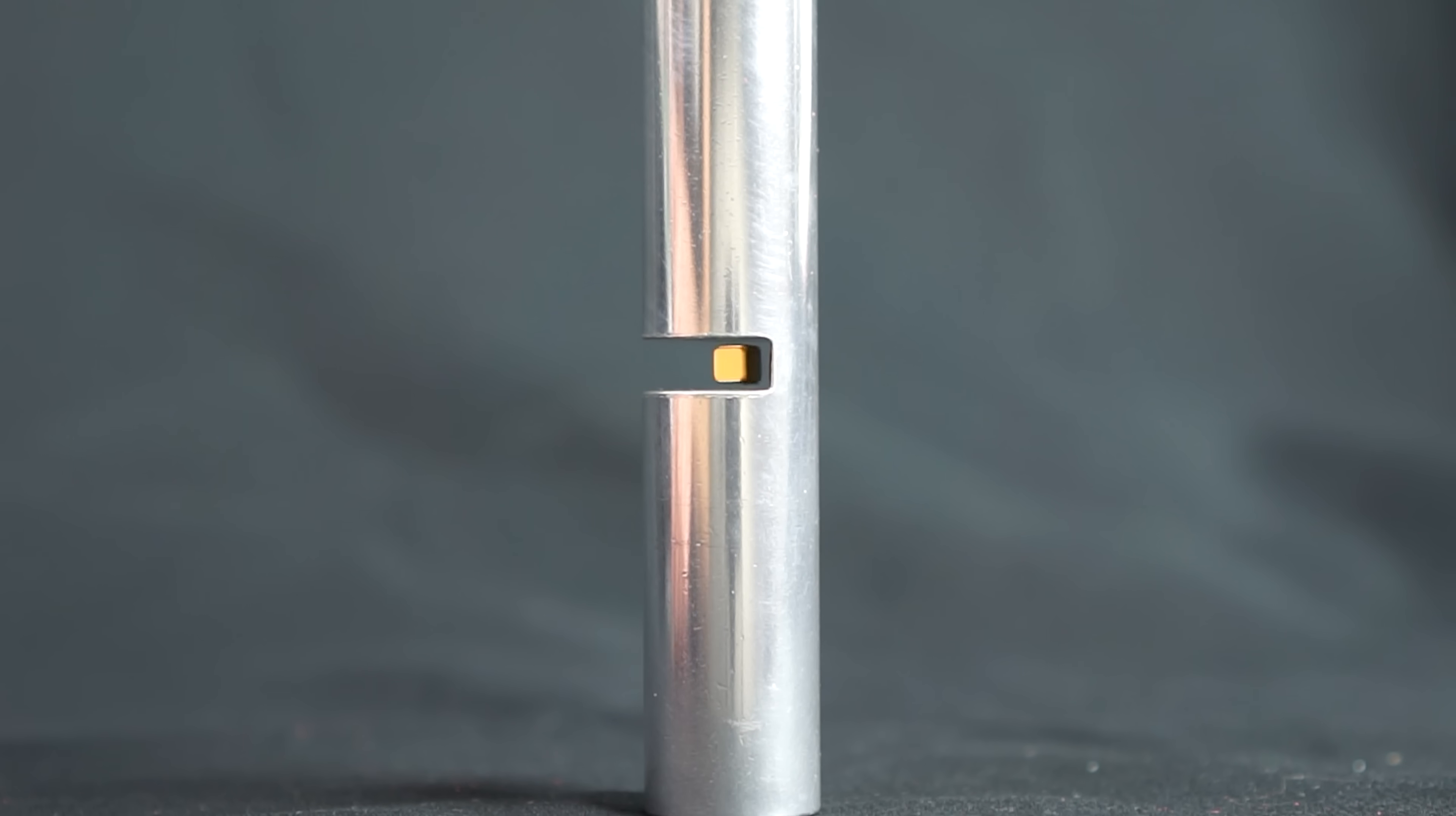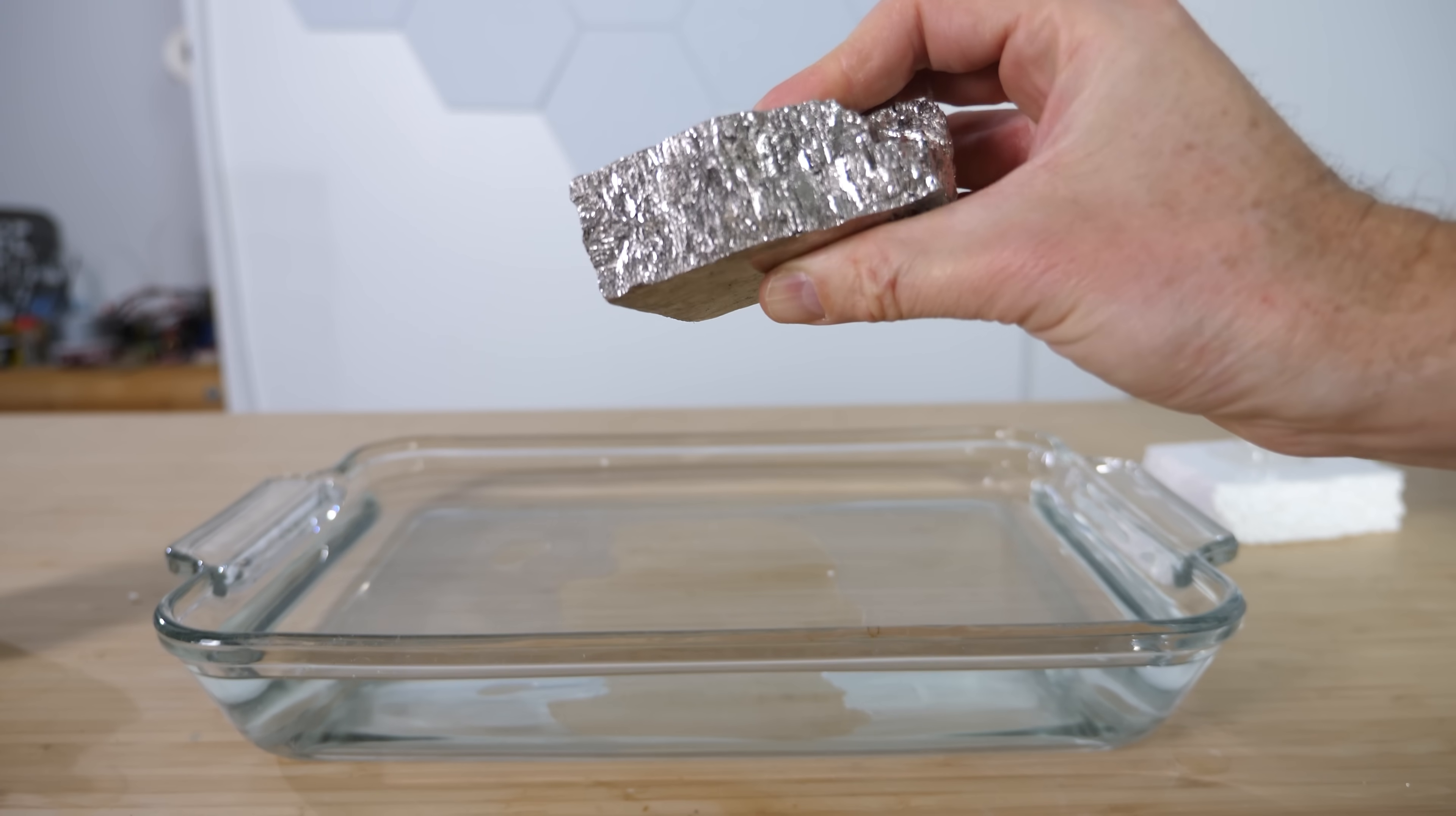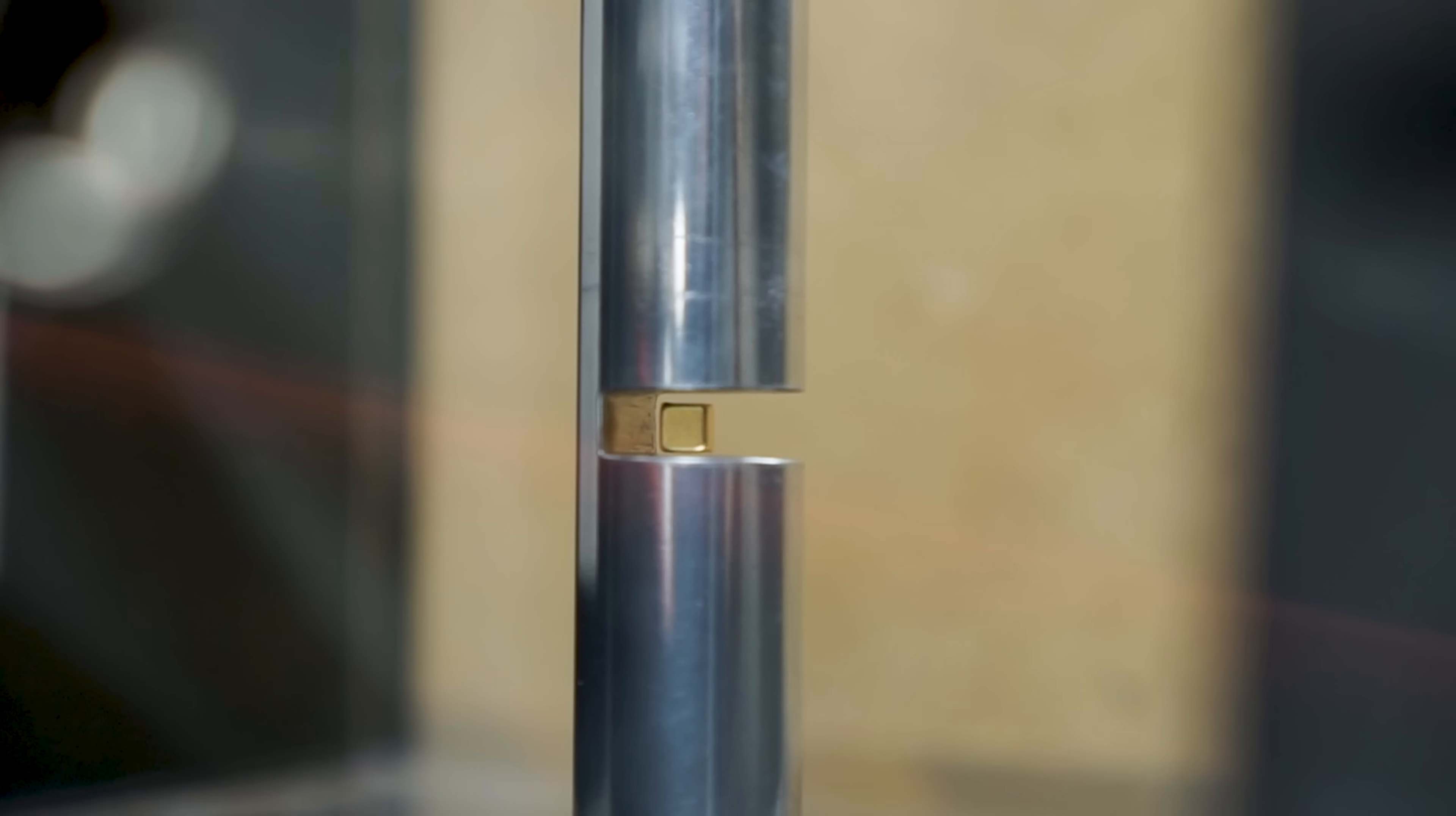This is a magnet levitating above a crystal of bismuth, but it shouldn't be doing this. Bismuth has the strongest natural ability to repel a magnet on Earth, but according to its atomic structure, it should be attracted to the magnet, not repel it. So then how is it levitating right before our eyes?